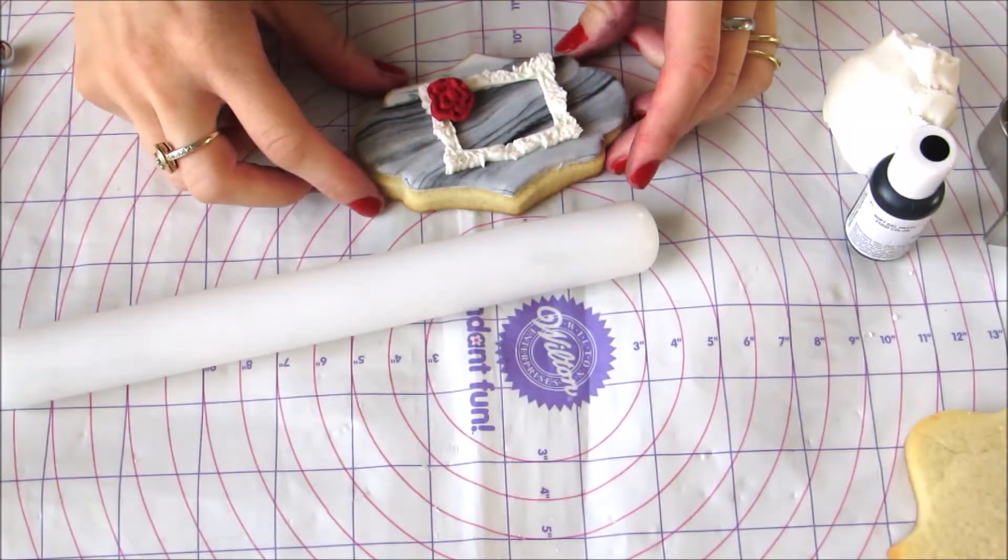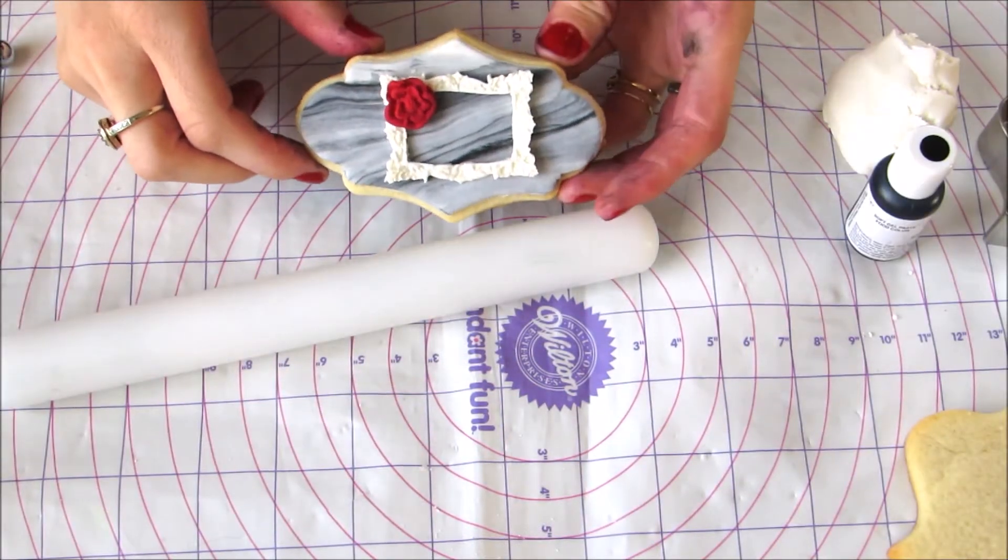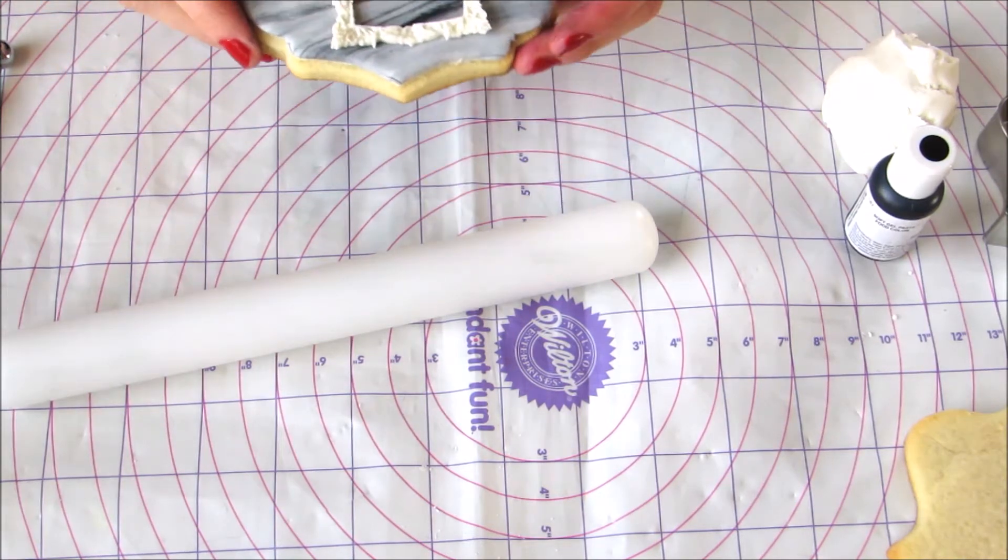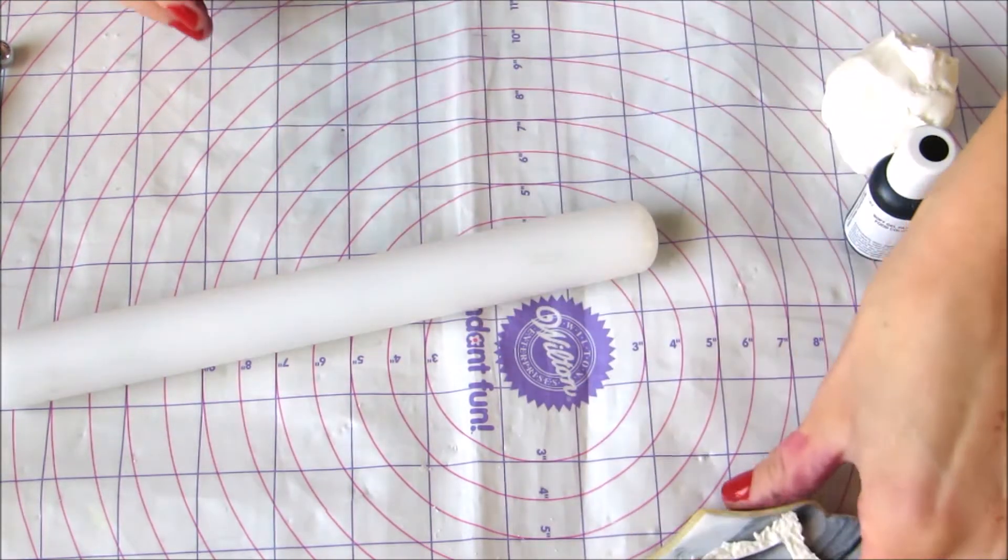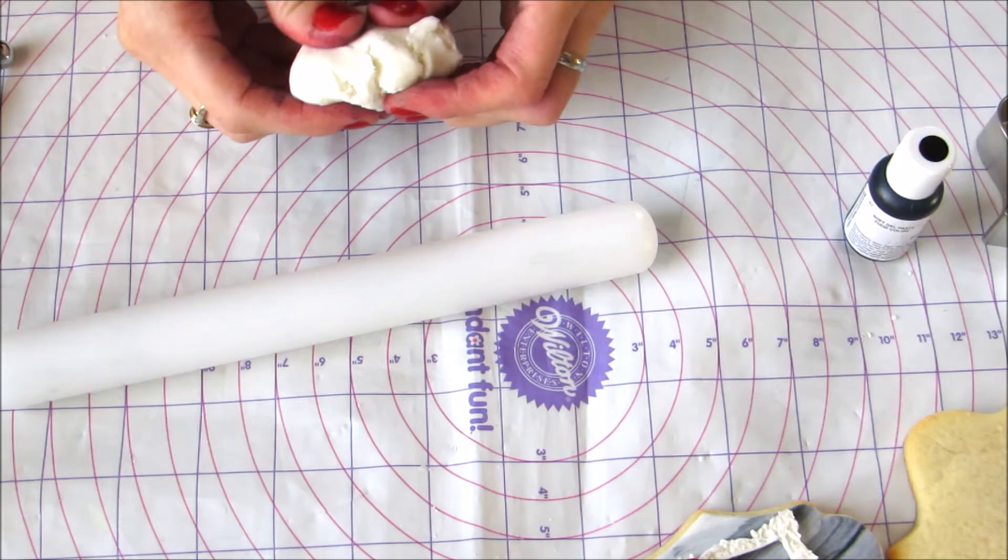Hi everyone, today I'll be showing you how to create the marble effect on a plaque cookie using fondant. The first thing you want to do is create your marble effect.